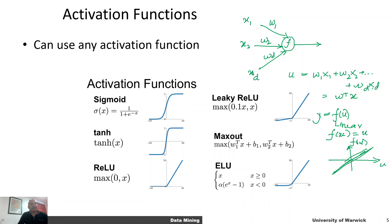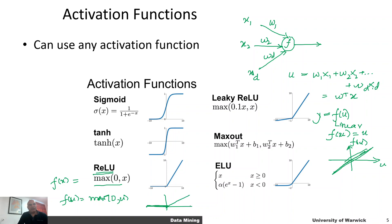We can also have other types of activation functions — for example, the rectified linear unit (ReLU), which only generates an output when the net input is positive. Its equation is f(u) = max(0, u). So if the net input of the neuron is negative, it does not fire or generate any output, but if it is greater than zero, it generates the same value. This is what is called a rectified linear — that is where the rectification takes place.